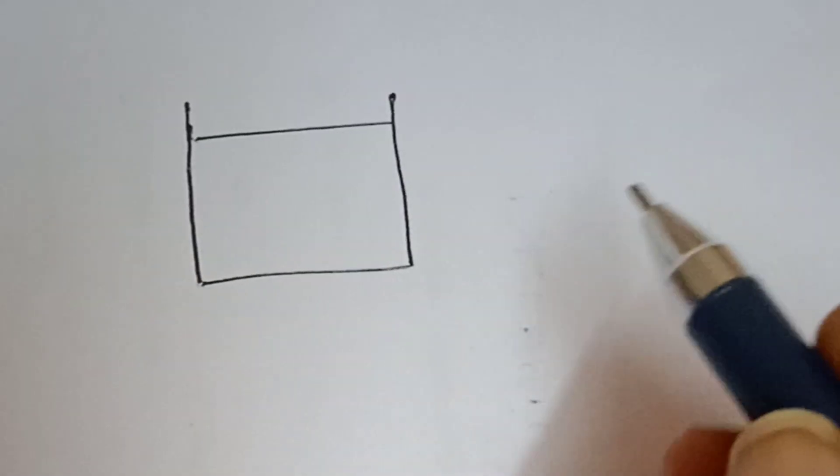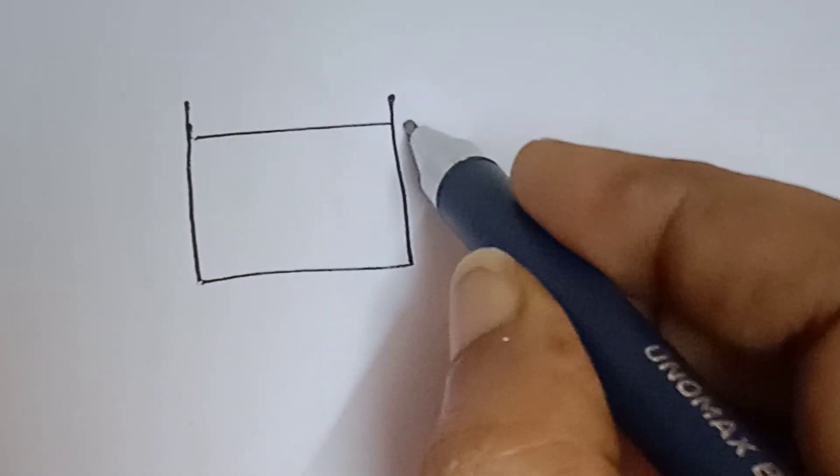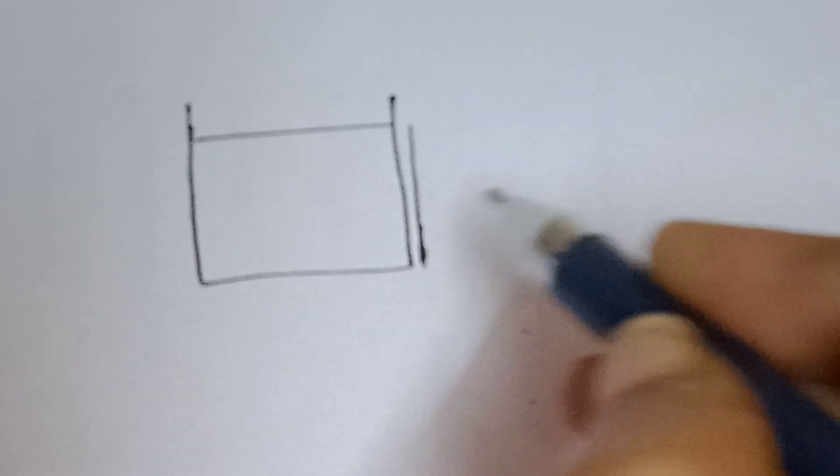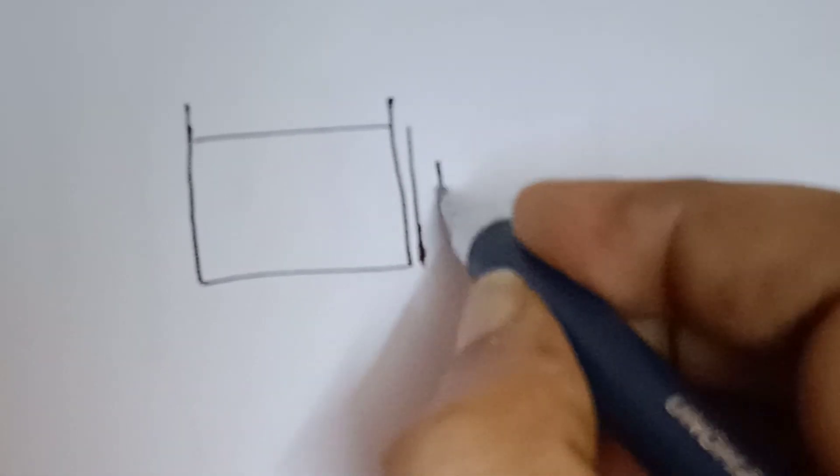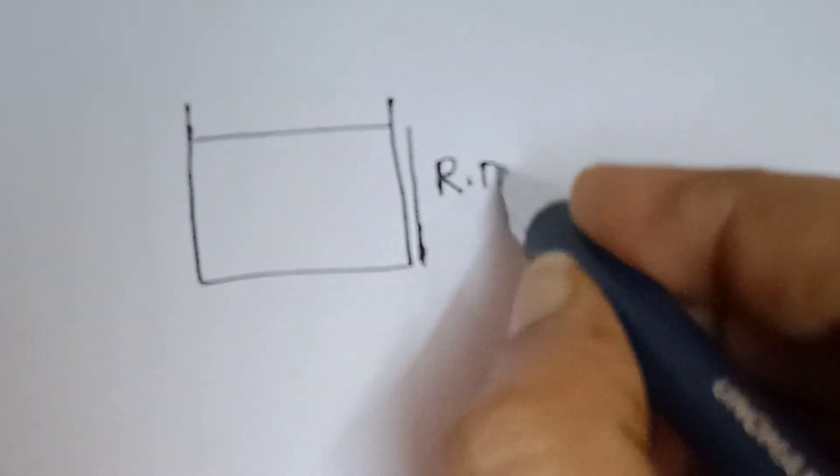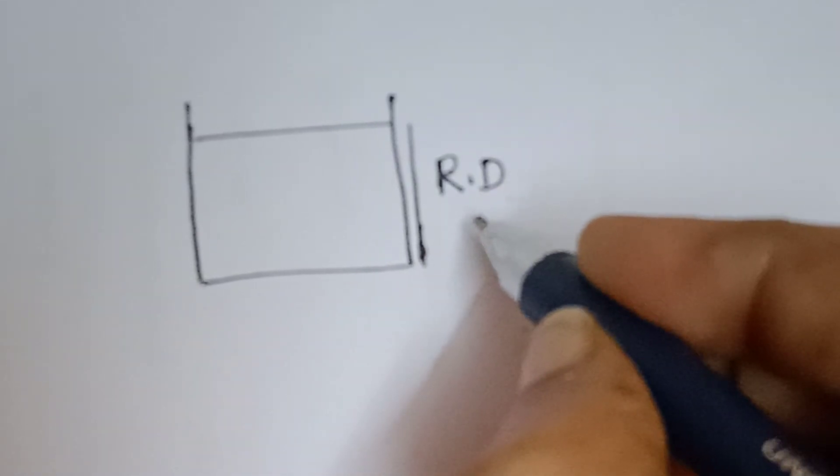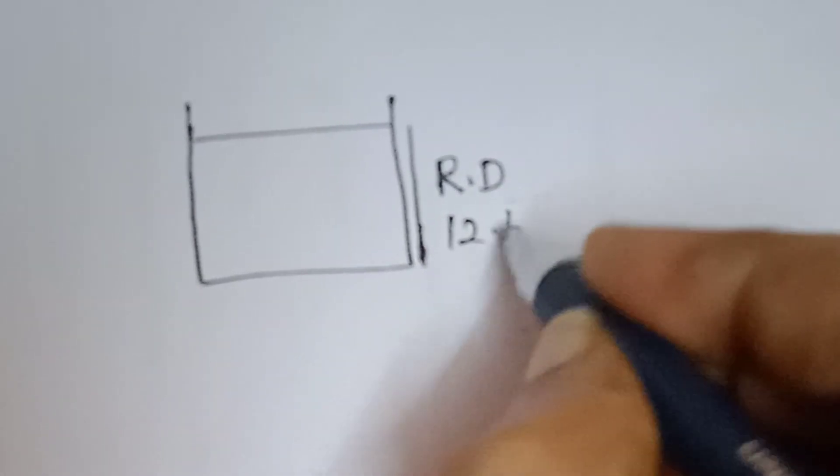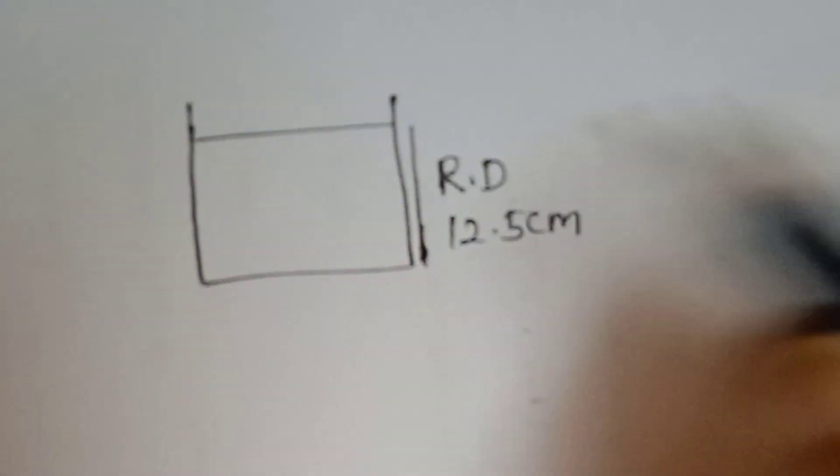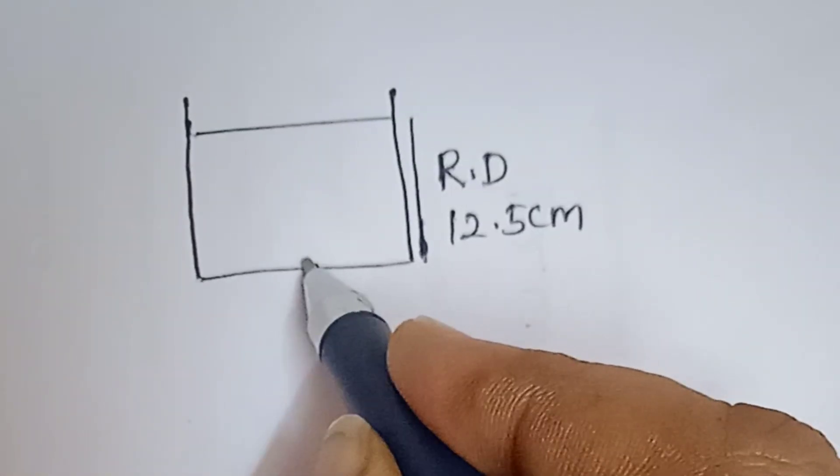In this problem, we have a water tank with 12.5 centimeter height. Using a microscope, the apparent depth measured is 9.4 centimeters. So the real depth is 12.5 centimeters and the apparent depth is 9.4 centimeters.